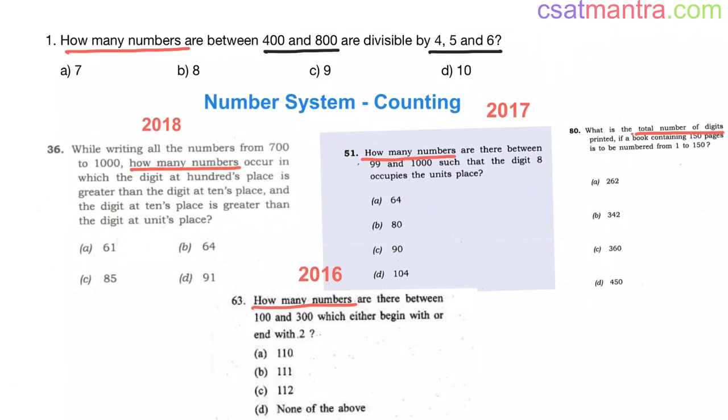Similar questions are asked in CSAT. In 2018 there is one question asked, in 2017 there are two questions asked based on counting, and in 2016 there is one question asked. You will see there are one or two questions asked based on counting in every year's CSAT. These questions are very easy if you pay a little attention.